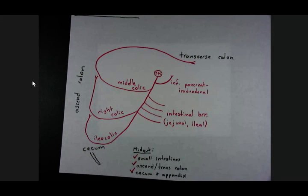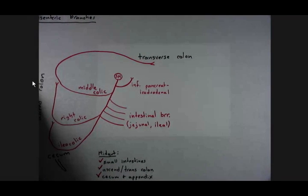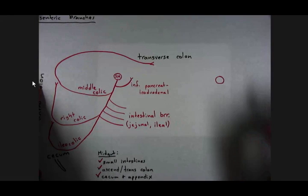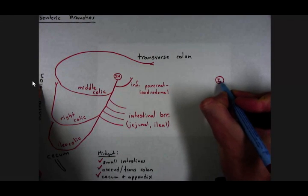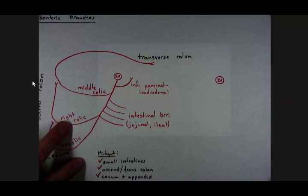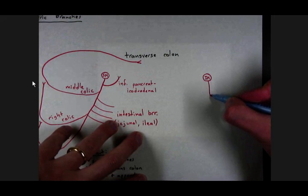The inferior mesenteric is very simple. We could definitely do it in two minutes. Just going to come over to the right side here and put in another circle, put in IMA for inferior mesenteric. And I'm going to drop the inferior mesenteric artery down.